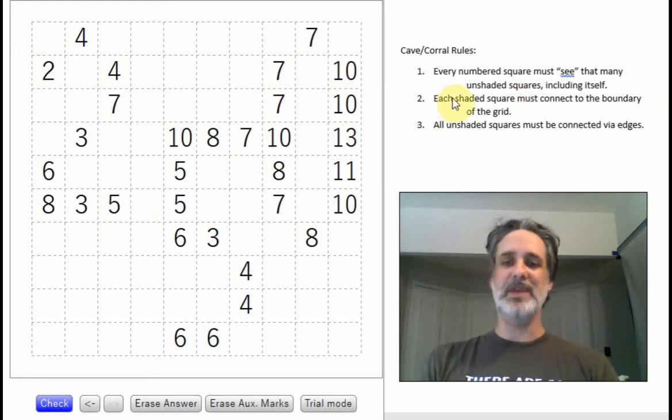Number two, each shaded square must connect to the boundary of the grid. So if there's any shaded square whatsoever, it has to escape to the edge. And there's going to be some stuff where we can fill in some nice things. Like I'm looking right here, these all have to be unshaded because if they were shaded, there's no way for them to escape.